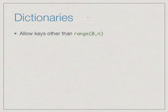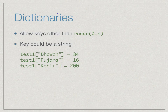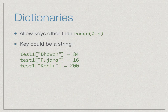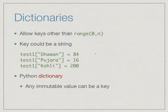We can generalize this concept by allowing keys from a different set — not just the range 0 to n-1. The key could be a string, for example. We might want to index values by the name of a player, keeping track of scores in a test match: one player's score is 84, another's is 16, another's is 200. These are stored in a more generic structure where values are indexed not by position but by some abstract key — in this case, the player's name.